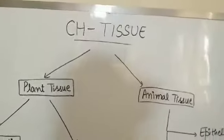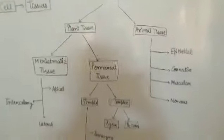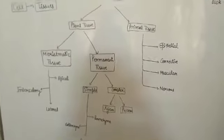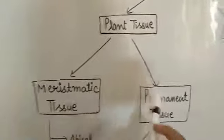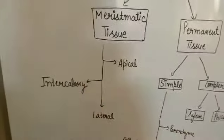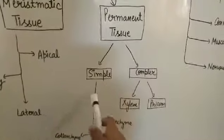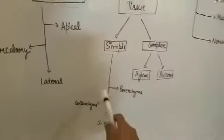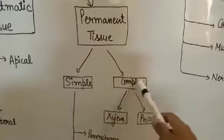Just as cells were of two types — plant cell and animal cell — in the same manner tissues are of two types: plant tissue and animal tissue. Plant tissue can be categorized into two: meristematic tissue and permanent tissue. Meristematic tissue has three categories: apical, intercalary, and lateral meristematic tissue. Permanent tissue has two types: simple permanent tissue and complex permanent tissue. Simple permanent tissue has three categories: parenchyma, collenchyma, and sclerenchyma. Complex permanent tissue is divided into xylem and phloem.